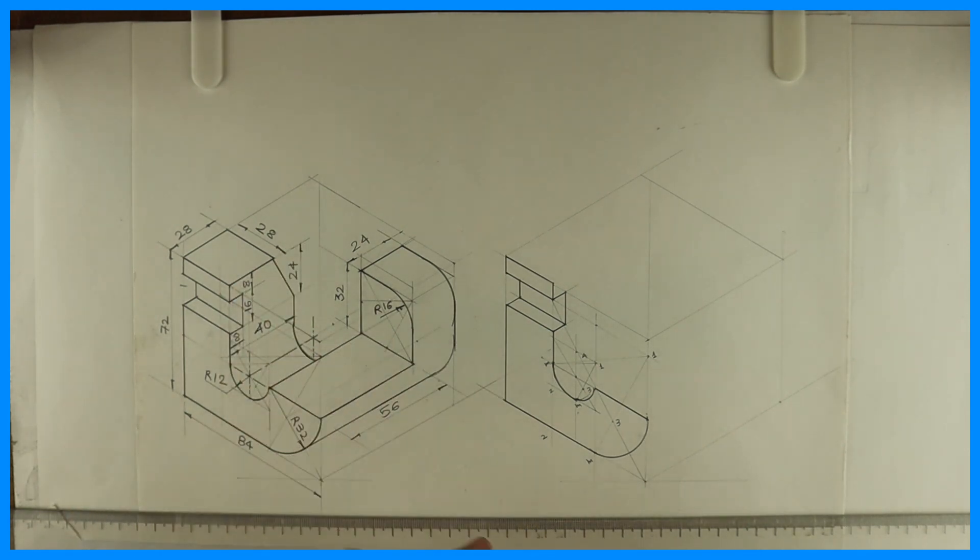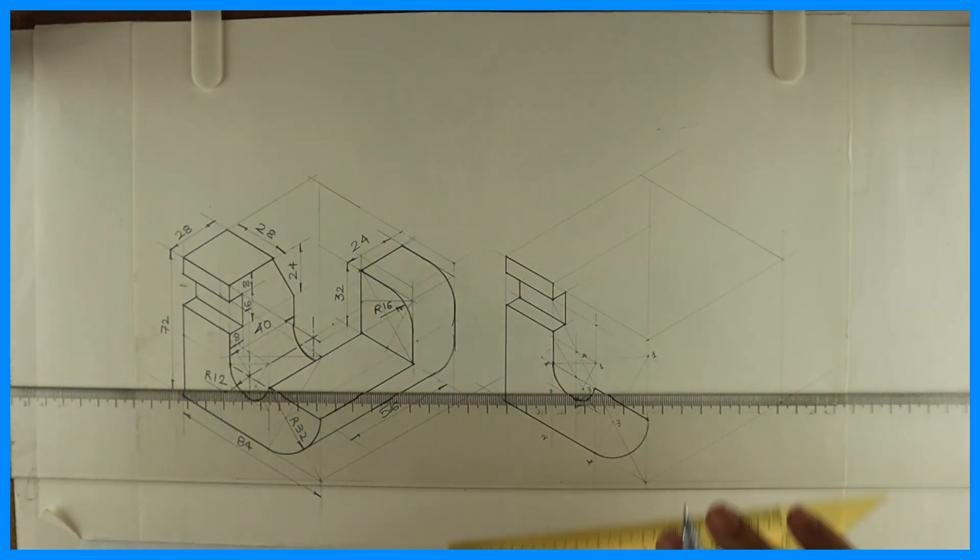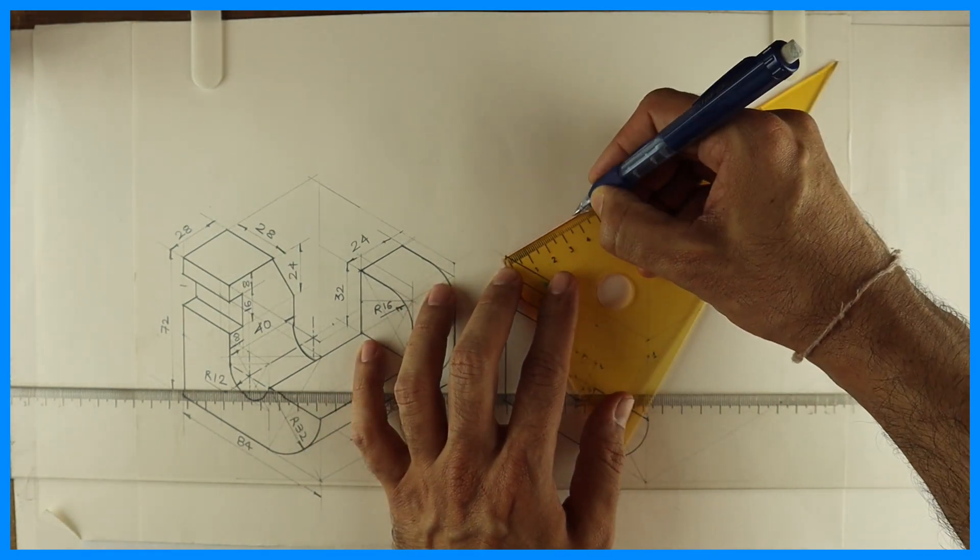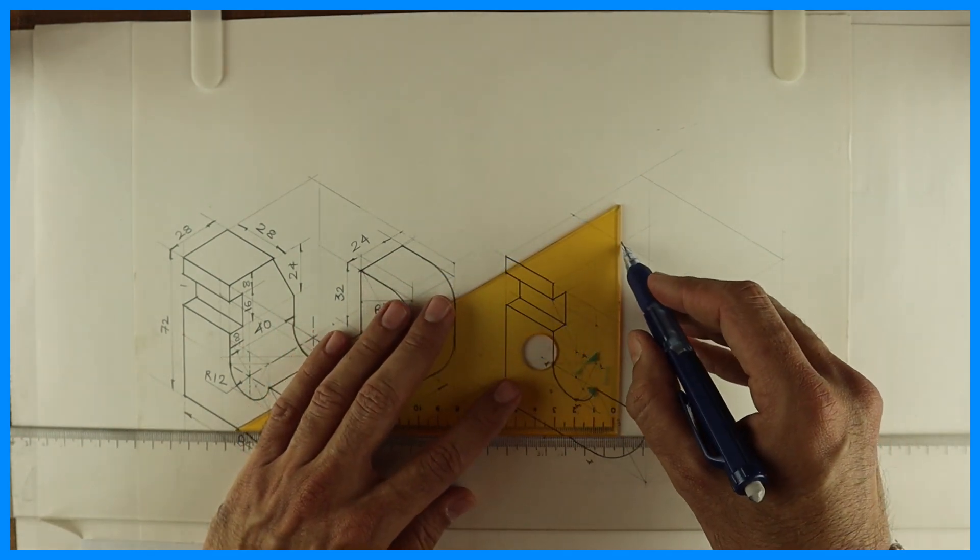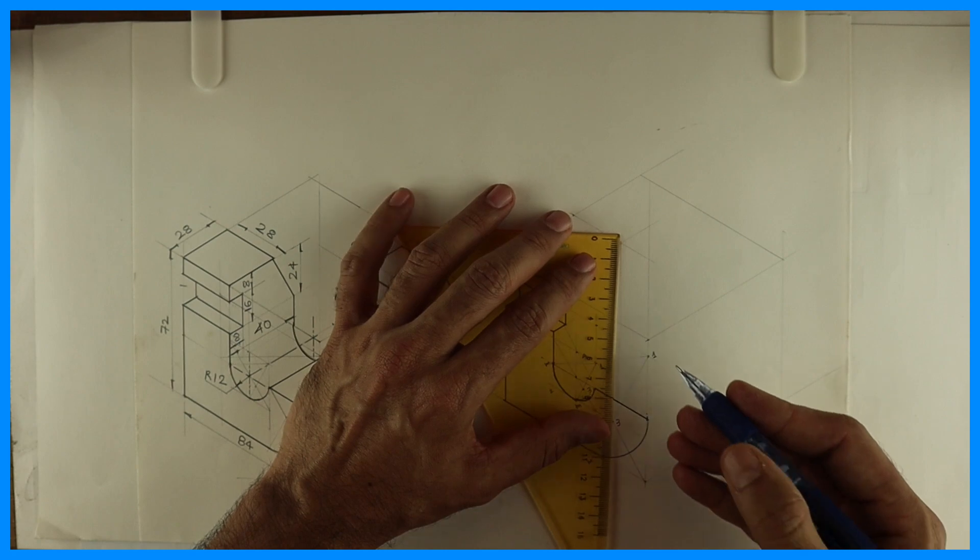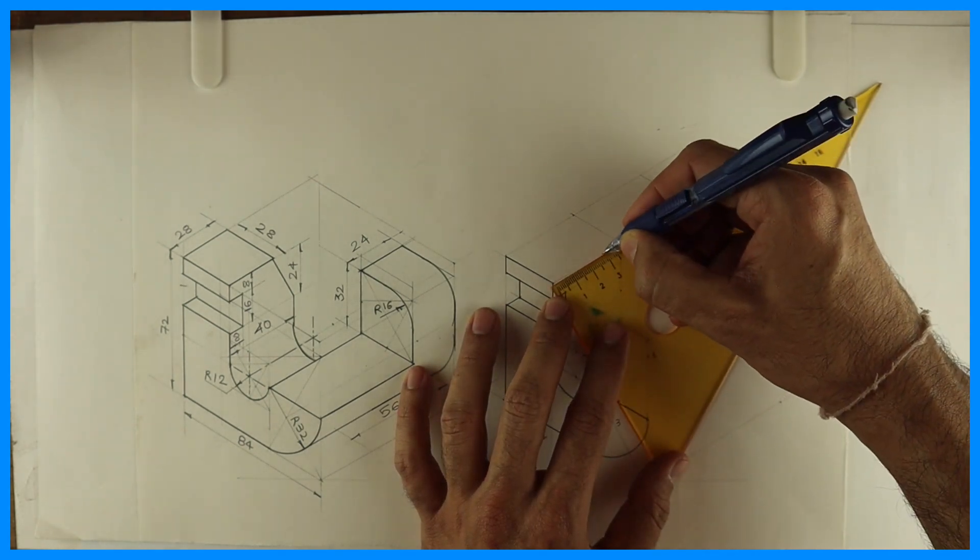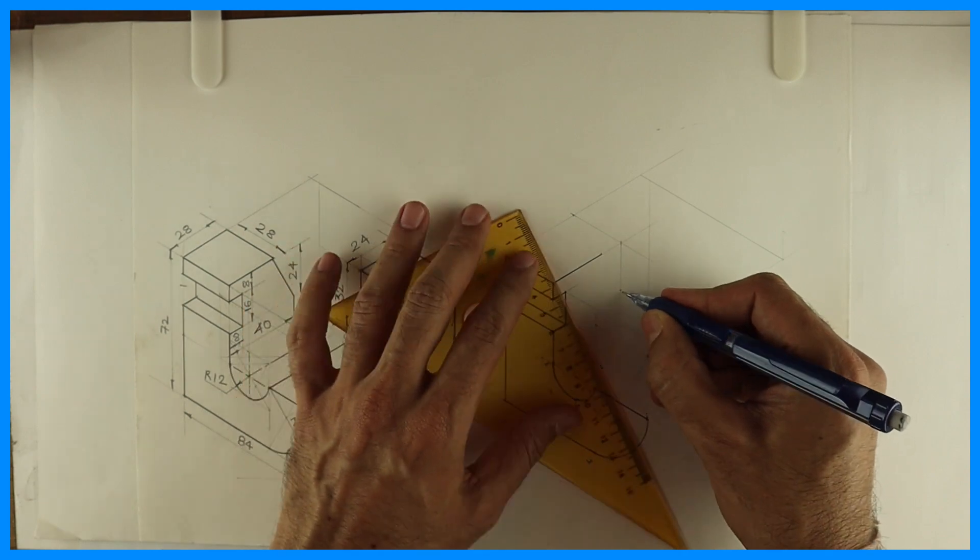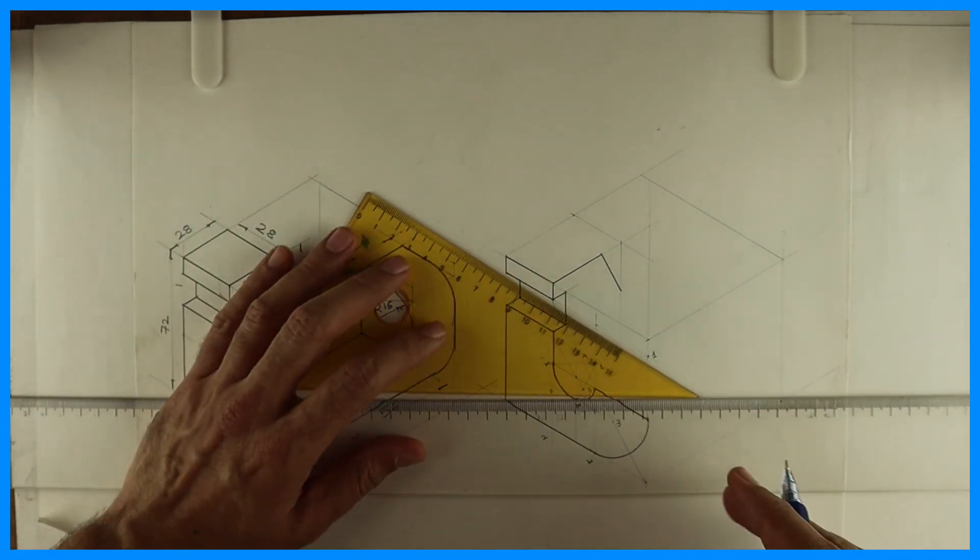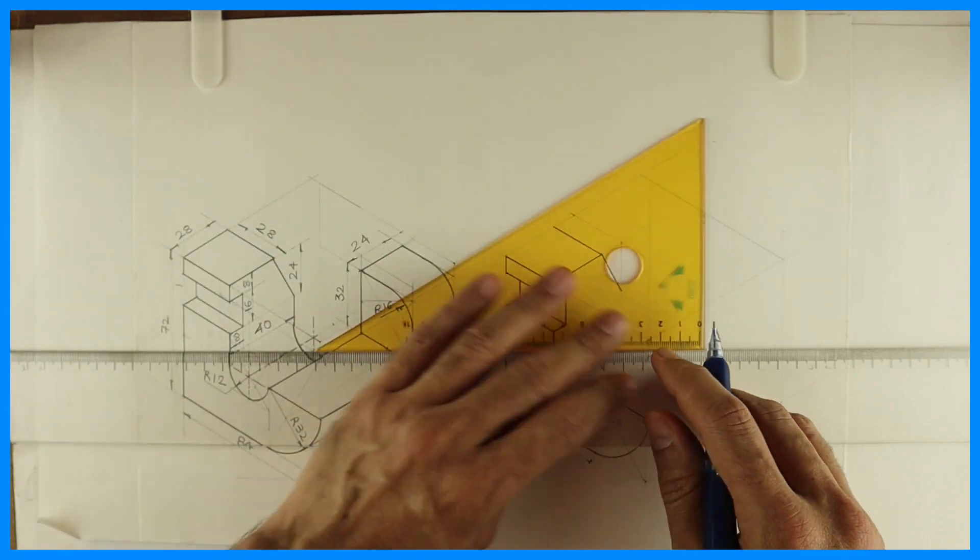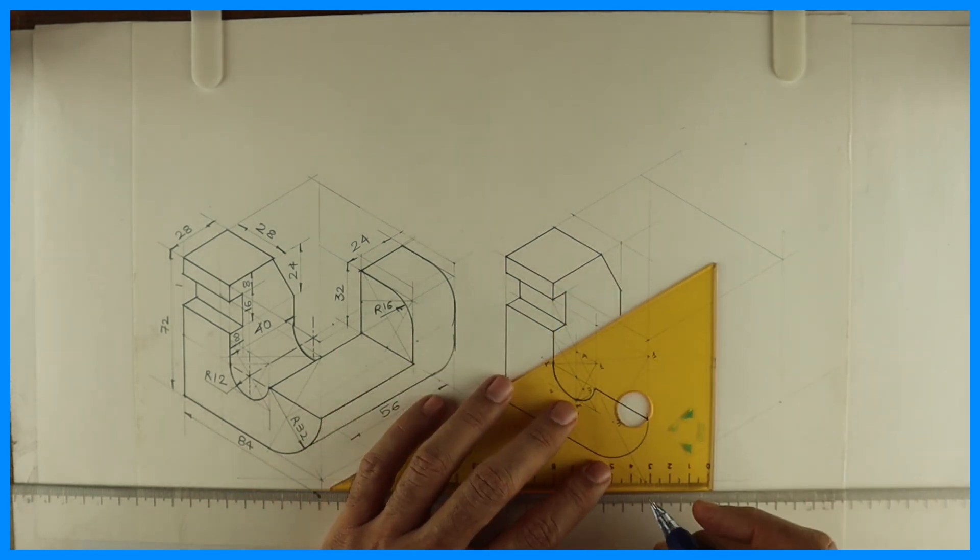Now we will see how much it is going inside. This is 40, so you take 40. You have to go down by 24. And this is 28. Then you can draw this box. So we are done with that part also. This again will go down by 16.